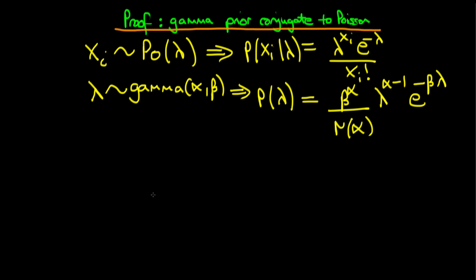What we're trying to show here is that the posterior distribution of lambda actually has a very similar form to that which we've written down for the prior. So that's what we're trying to prove. How are we going to go about proving that? Well, first of all, we use Bayes's rule.